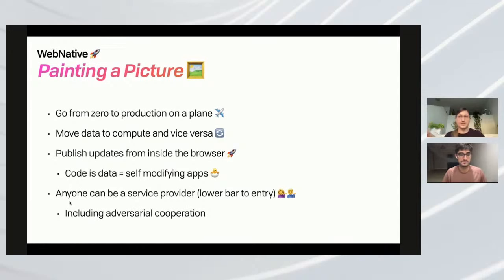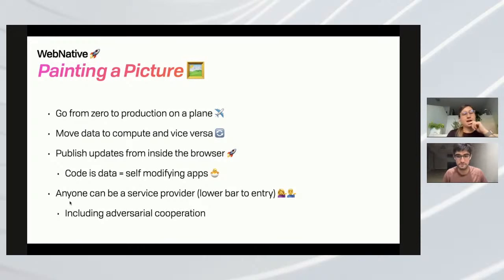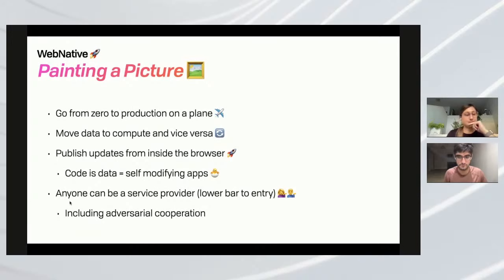Because code is data, we can move data to compute but also compute to data, and move around functions as well. Publishing updates from inside the browser is possible because we can capture any of this stuff as just regular files. You could edit in the inspector and push that. We haven't done this yet, but you can have self-modifying apps — the first time somebody runs something you can cache it and bake it right into the page. Anyone can be a service provider — you should be able to clone apps or provide storage or compute for anybody in the system.